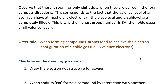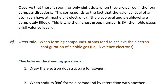This is why the highest group number is 8A. Another important vocabulary word is the octet rule. When forming compounds, atoms tend to achieve the electron configuration of a noble gas — that is, atoms bonded to other atoms in a compound tend to end up with eight valence electrons.